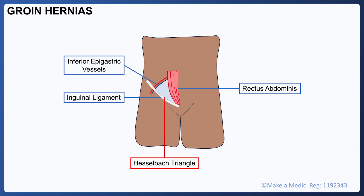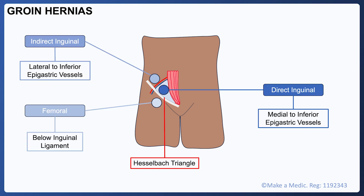Having delineated Hesselbach's triangle, we can better appreciate where the different types of hernia arise. Direct inguinal hernias arise due to a weakness in the posterior wall of the inguinal canal called Hesselbach's triangle. As both direct and indirect inguinal hernias arise superior to the inguinal ligament and lateral to the rectus abdominis, the main key structures to note are the inferior epigastric vessels. Direct inguinal hernias arise medial to the inferior epigastric vessels, whereas indirect inguinal hernias arise lateral to the inferior epigastric vessels and enter the inguinal canal through the deep inguinal ring. Finally, femoral hernias arise inferior to the inguinal ligament.